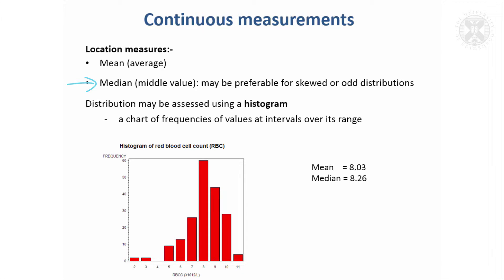An easy way to assess how the data are distributed is using something called a histogram. So this is a histogram of another of the measurements taken in that experiment, which was red blood cell count. What a histogram does is it plots the frequency and the number of values occurring at each point.